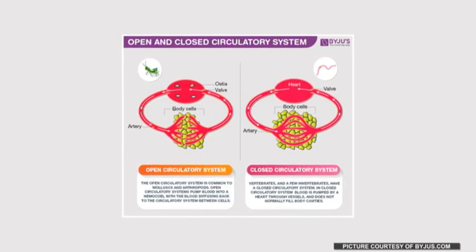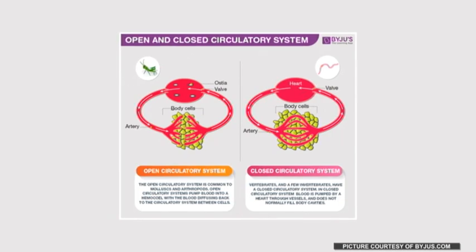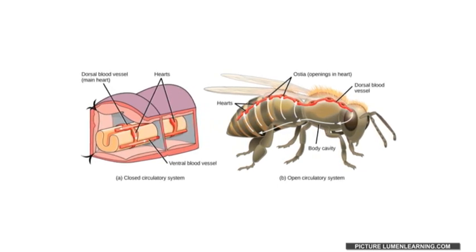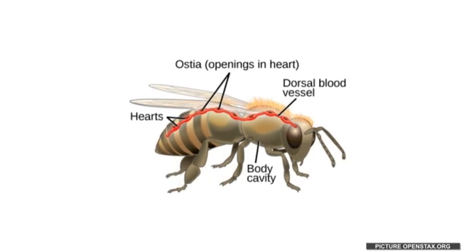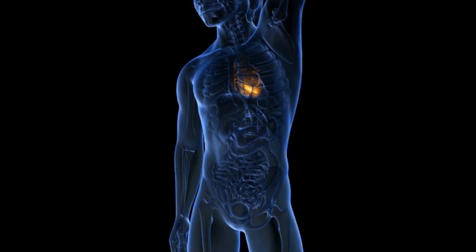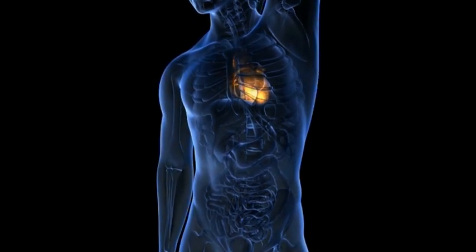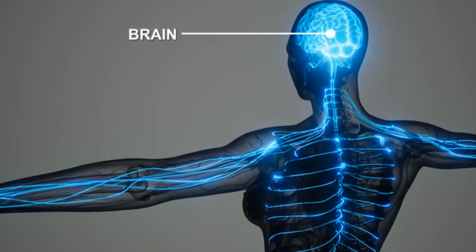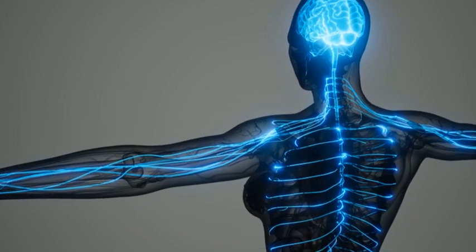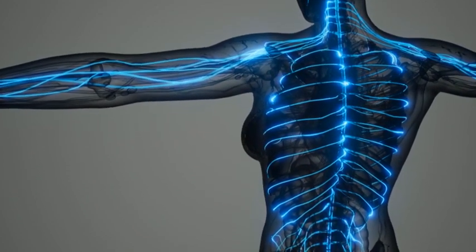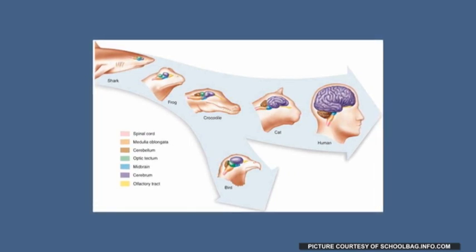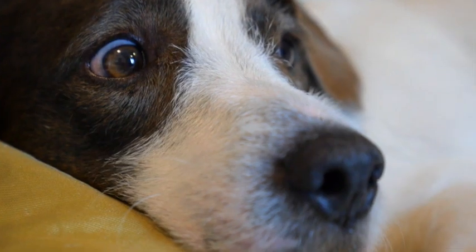Vertebrates have other characteristics that make them different from other animals. They have a closed circulatory system, as opposed to the open circulatory system of other animals. In some insects, for instance, a very simple heart pumps blood out into the tissue of the animal, and the blood passes through the tissues and collects again in the heart. Vertebrates, on the other hand, have a complex heart that pumps blood to all parts of the body. Vertebrates also have a well-developed nervous system made up of the brain, spinal cord, and nerve cells. The spinal cord is a bundle of nerves that extends from the base of the brain and is protected by the backbone. Vertebrates have larger and more developed brains compared to other animals, and well-developed sense organs such as eyes and ears.